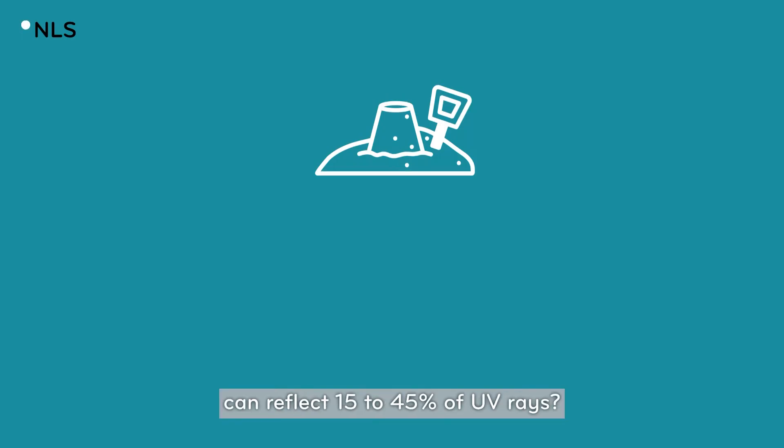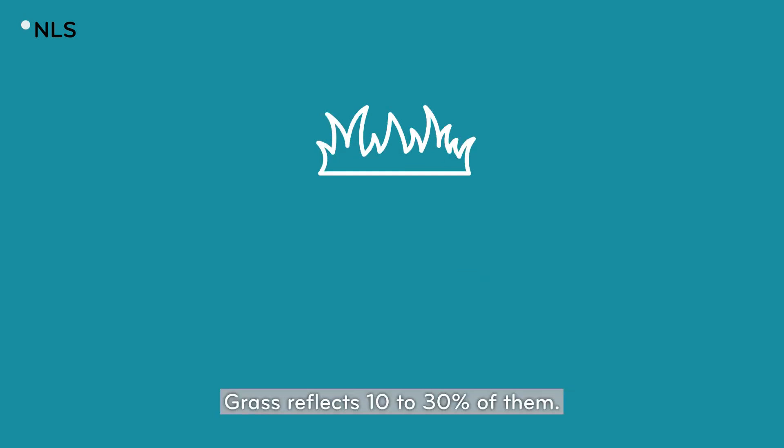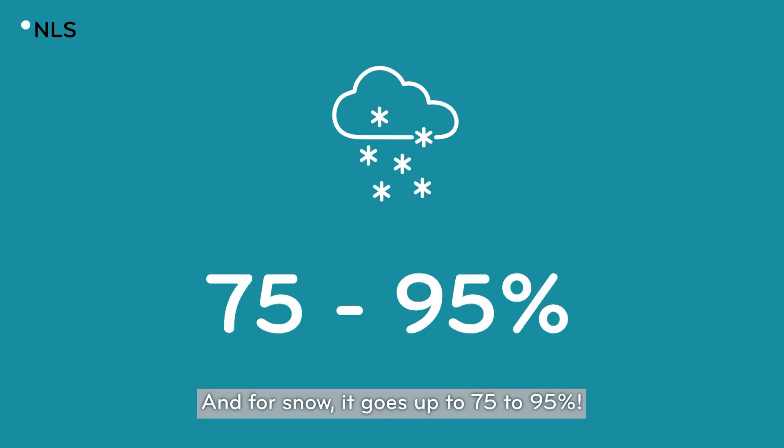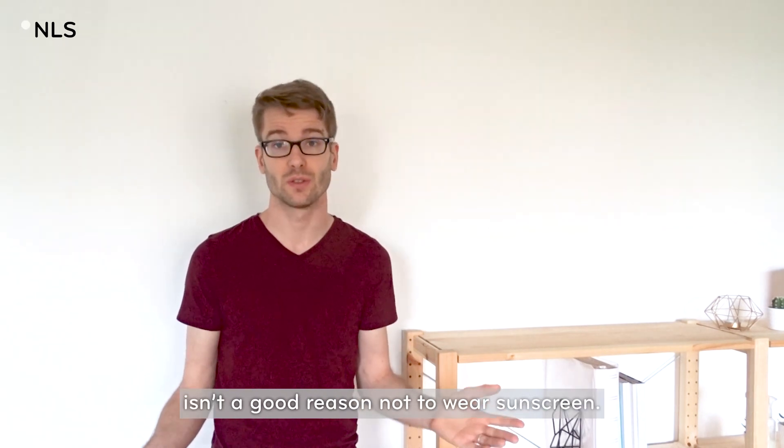Did you know that sand can reflect 15 to 45% of UV rays? Grass reflects 10 to 30% of them. And for snow, it goes up to 75 to 95%. That's why being in the shade is a good reason not to wear sunscreen.